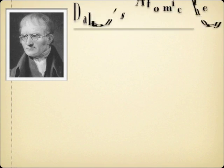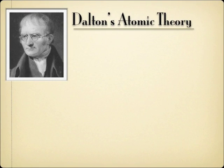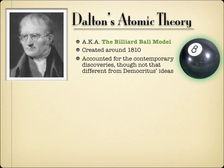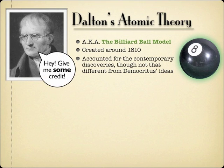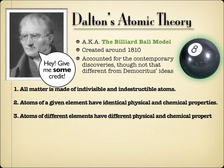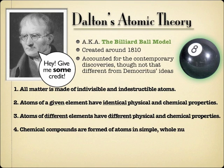What John Dalton really did was gather up all the information that people had known and discovered since Democritus and created five principles. Many of these are not all that different than what Democritus thought of, but they did incorporate some of the thoughts of the time, including his own, based on the law of multiple proportion. Nowadays these might not seem all that impressive, but what is impressive is that some of these have held and stood up to the test of time.